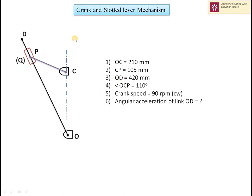The mechanism is a crank and slotted lever mechanism. Distance between fixed pivots OC is 210 millimeters, vertical. Crank length CP is 105 millimeters. Distance OD is 420 millimeters, and angle OCP is 110 degrees. Crank speed is 90 rpm in the clockwise direction. The crank is link CP. We have to determine the angular acceleration of link OD, along which the slider P slides.